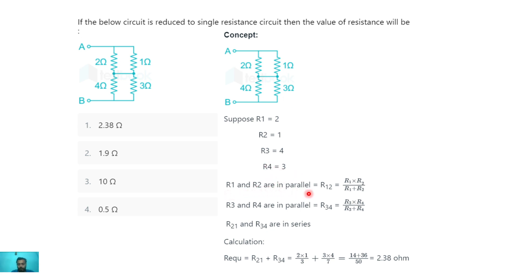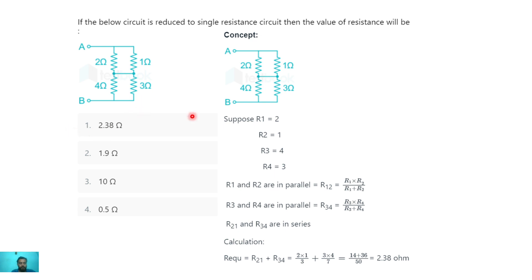R1 and R2 are in parallel, giving R12. R3 and R4 are in parallel: R34 = (R3×R4)/(R3+R4). Then R12 and R34 are in series, giving R_eq = R12 + R34 = 2.38 ohms. So the correct option is 2.38 ohms as the equivalent resistance.